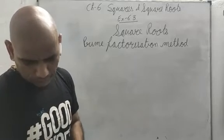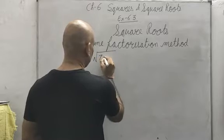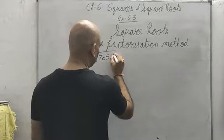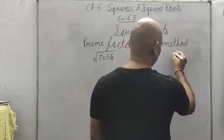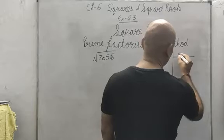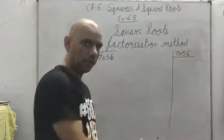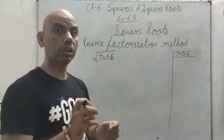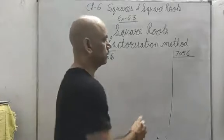For example, we want to find out the square root of 7056. So what I will do? I will simply find out the prime factors. It is not LCM — you are finding prime factors, meaning all those numbers should be prime. You cannot take a composite number.